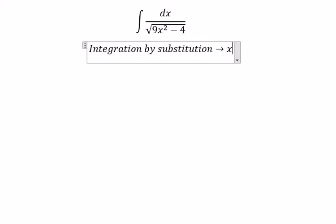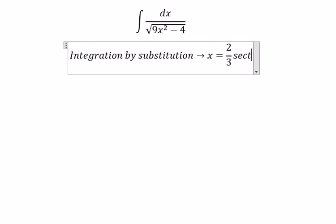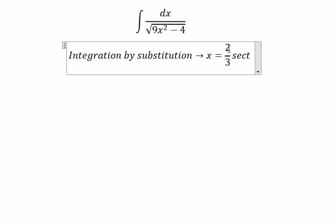So we put x equal to 2 over 3 sec t, because the number 2, that's 2 squared in here. Number 3, that's about number 9, 9 is 3 squared in here.